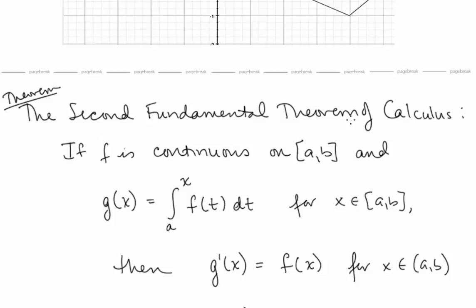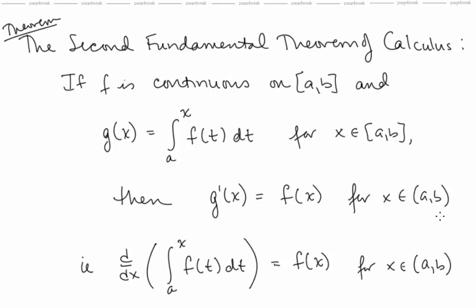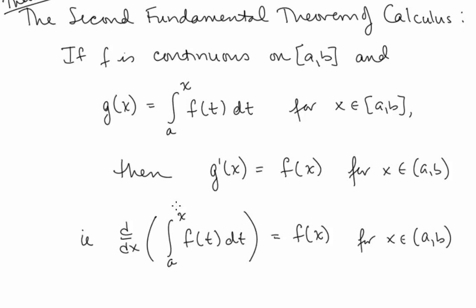The Second Fundamental Theorem of Calculus states: if f is continuous on the closed interval [a, b], and g(x) is defined to be the integral from a to x of f(t) dt for x in [a, b], then g′(x) = f(x) for x in the open interval (a, b). The derivative of this integral is just the function inside the integral. We already knew the integral of a derivative gives the original function — now the derivative of an integral also gives us the original function.